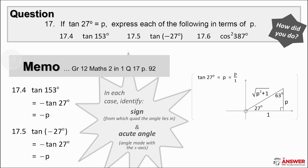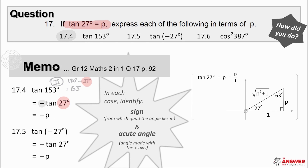Let's have a look next at 17.4 — tan of 153 degrees. First, we need to reduce to the ratio of an acute angle using quad angles. In this case, 153 degrees is a second quadrant angle, and so tan is negative in the second quad, and the acute angle being made with the x-axis is 27 degrees. The information given says that tan of 27 degrees equals p, and so this is just negative p. It will also work to read it off the sketch, of course.